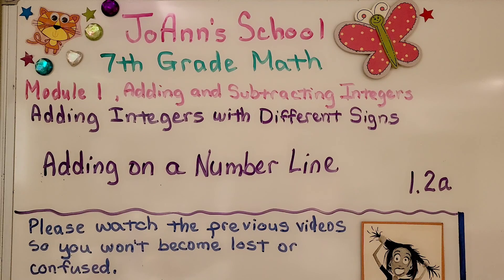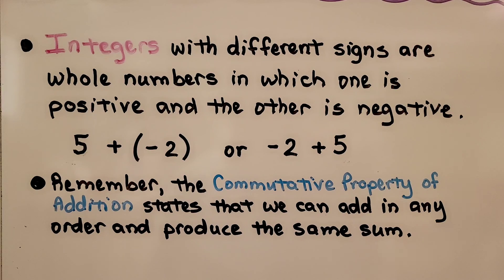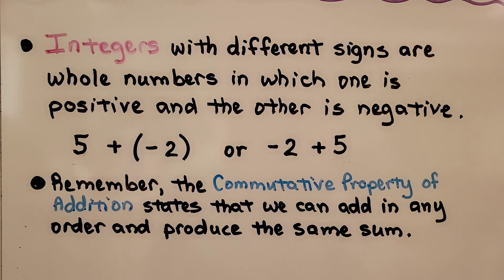We're now at lesson 1.2a, and we're going to be adding integers with different signs on a number line. Integers with different signs are whole numbers in which one is positive and the other is negative, like a positive 5 plus a negative 2, or a negative 2 plus a positive 5. Remember, the commutative property of addition states that we can add in any order and produce the same sum, so we can switch the addends around.